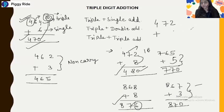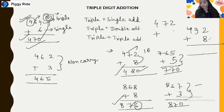Let's take another number: 492 plus 8. By the conventional method: 2 plus 8 is 10, carry is 1, so 1 plus 9 is 10 again, carry is 1, and 1 plus 4 is 5. So the answer will be 500.